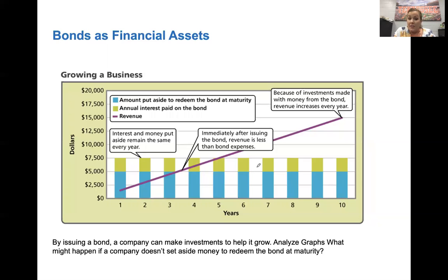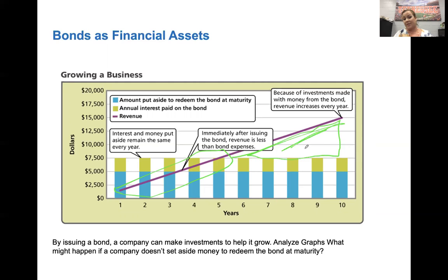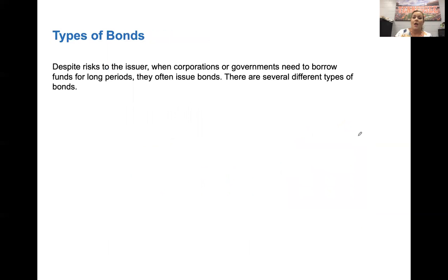Businesses issue bonds in order to grow. Here's an example where a company issued bonds, set aside bond money to pay it off at maturity, and paid interest along the way. You can see they break even around year five, and after year five, everything beyond that is profit made because of the investment. Once the bond is paid off, it's pure revenue — that's why businesses expand. When corporations and governments need to borrow money for long periods of time, they issue bonds. That's how our national debt is funded through 30-year treasury bonds, and as long as they pay when due, they're not defaulting.